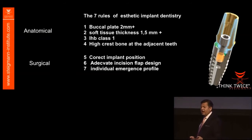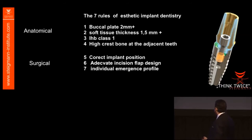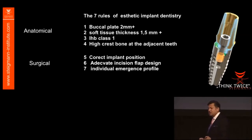Whenever we tried in the past to mimic teeth with implants, we failed. We need buccal plate 2 mm, soft tissue 1.5 mm. Interproximal height of bone should be there. We have the anatomy of the patient and our surgical skills of how to place an implant.